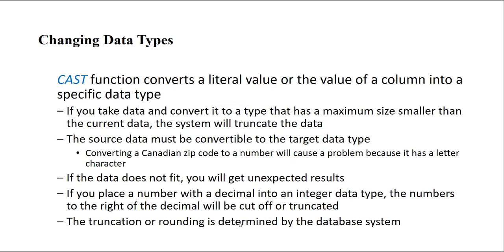When you want to change one data type to another, you use a function called CAST. CAST converts a constant value or column value into a specific data type. There are some rules: if the target data type has a maximum size smaller than the current data, the system will truncate the data to fit. Also, the data must be convertible to the target data type.